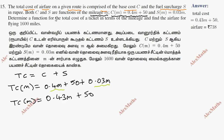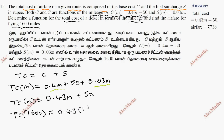Now determine the function for the total cost in terms of mileage. Find the airfare for flying 1600 miles. If we compute total cost for 1600, this is going to be 0.43 into 1600, plus 50. So if we multiply 43 by 16...